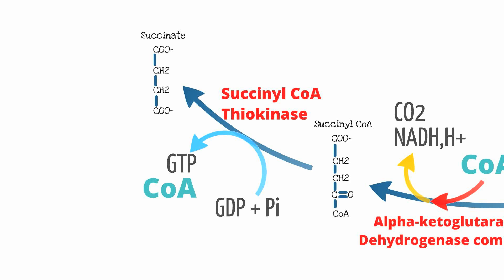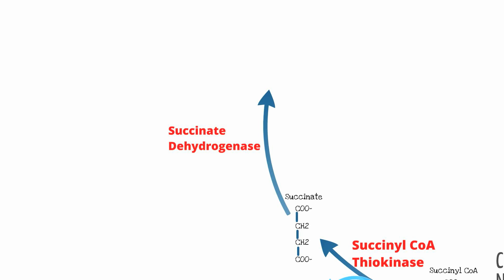Succinyl-CoA is acted on by succinyl-CoA thiokinase to form succinate. In the process, GTP is produced. Succinate dehydrogenase then acts on succinate, with FAD picking up two hydrogen ions to produce fumarate. Just like NADH, FADH2 is one of the drivers of energy production in the electron transport chain, which is the primary process of ATP production.